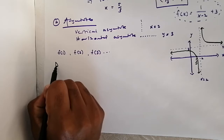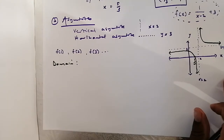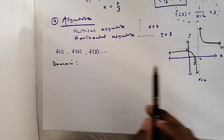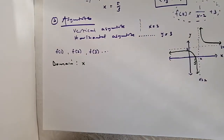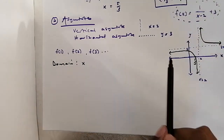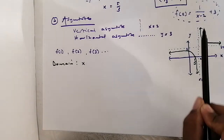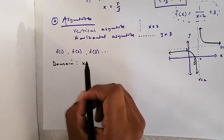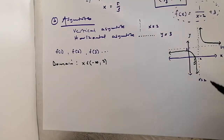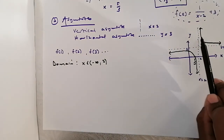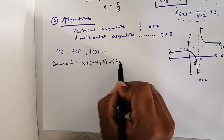The domain is where the graph exists horizontally — wherever the function is defined. Looking at the graph, from negative infinity we go until x = 2, where the graph is not defined. Then from 2 onwards the graph is defined up to positive infinity. So the domain is x ∈ (−∞, 2) ∪ (2, +∞).